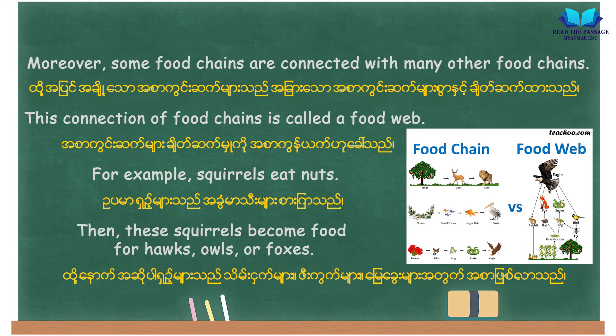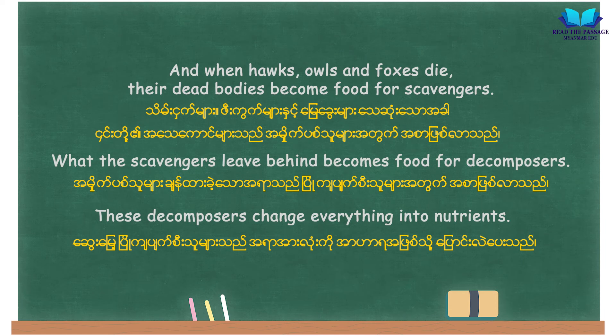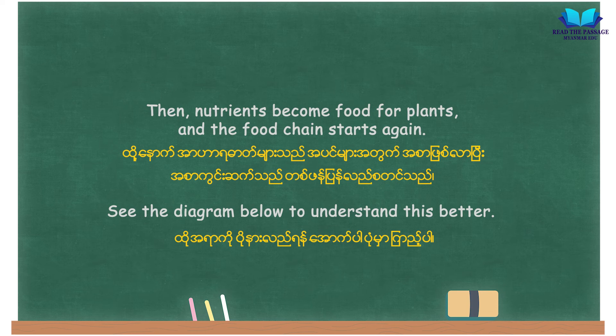Moreover, some food chains are connected with many other food chains. This connection of food chains is called a food web. For example, squirrels eat nuts. Then these squirrels become food for hawks, owls, or foxes. And when hawks, owls, and foxes die, their dead bodies become food for scavengers. What the scavengers leave behind becomes food for decomposers. These decomposers change everything into nutrients, which then become food for plants, and the food chain starts again. See the diagram below to understand this better.